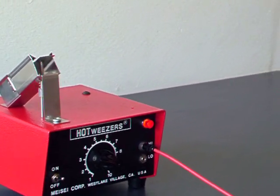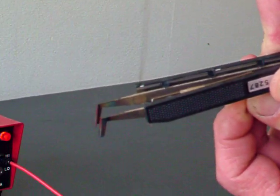The Hotweezers themselves have an adjustable length stop, as you can see there, which moves back and forth.